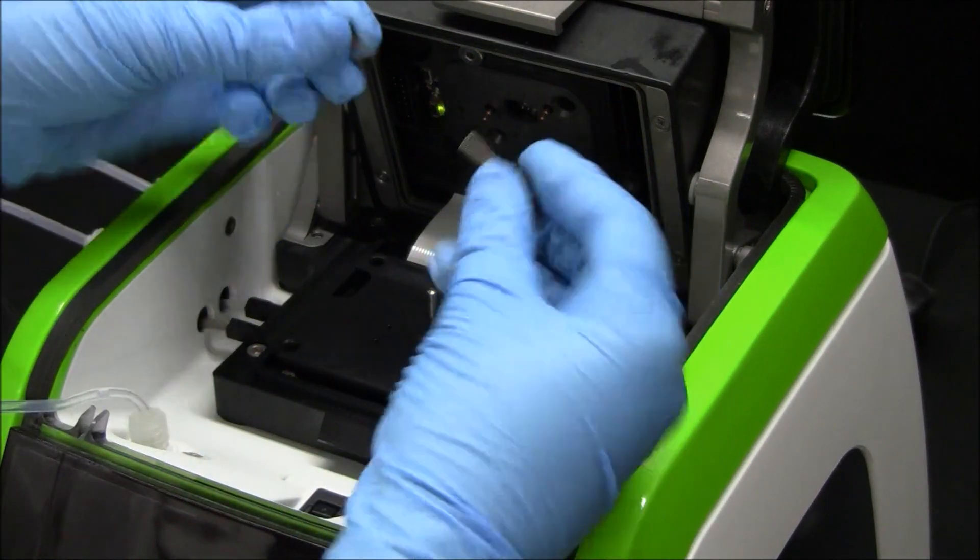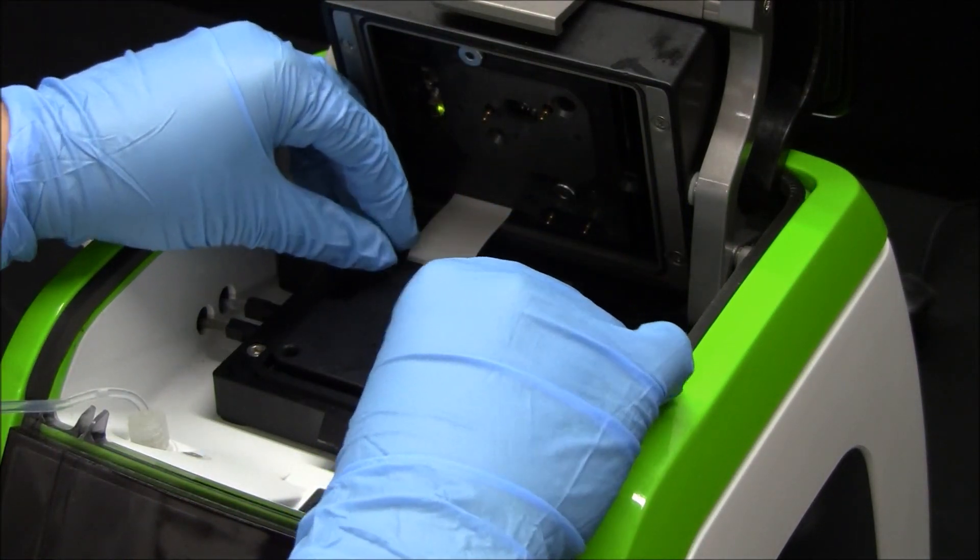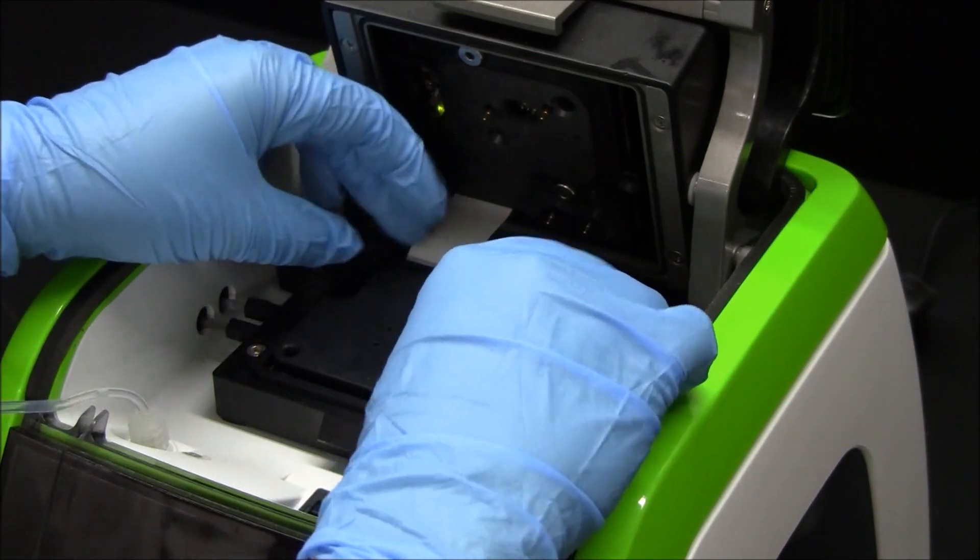Use the four thumb screws to secure the electrode block to the analyzer. Finger tighten until secure.